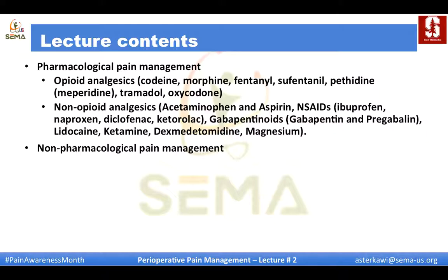In the last lecture we covered the background of perioperative pain, mechanism of pain, why it's important to treat pain, how we assess pain, risk factors and predictors of severe postoperative pain and chronic opioid use, and we wrapped up with how we do preventive analgesia. This lecture will be a pure pharmacology lecture — we're going to talk about the most common medications we encounter when we treat pain.